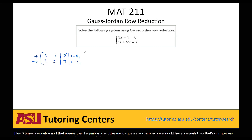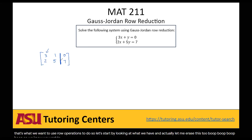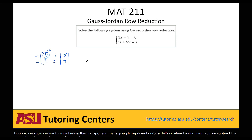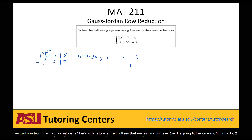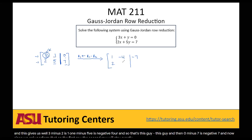We know we want a 1 in the first position representing x. We notice that if we subtract the second row from the first row we'll get a 1 there. So we say R1 becomes R1 minus R2. This gives us: 3 minus 2 = 1, 1 minus 5 = negative 4, and 0 minus 7 = negative 7. Since we only performed that on the first row, the second row stays exactly the same: 2, 5, 7.